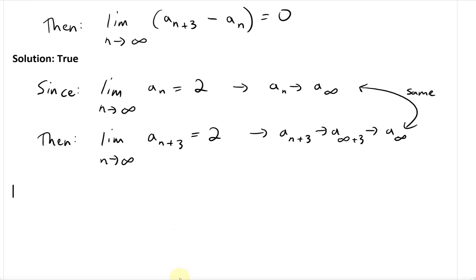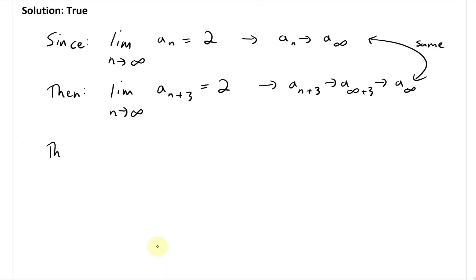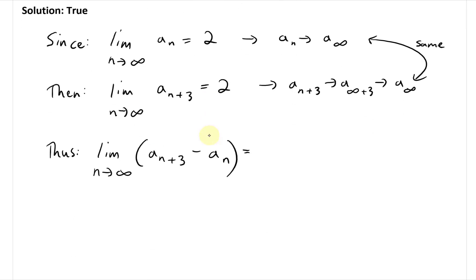Thus what we have is, limit as n approaches infinity of a_{n+3} minus a_n is going to be, by our limit rules, the limit of both, you could write these together, limit as n approaches infinity of a_{n+3} minus...